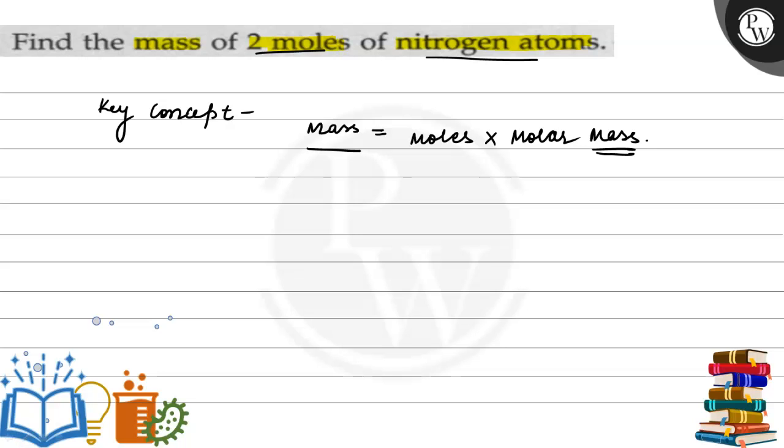Okay, so let's start doing the question. So firstly, humare paas jo moles hain, wo kitne hai? Two moles. So it is given that number of moles equals two moles. And the molar mass of nitrogen atom is equals to 14 gram per mole.